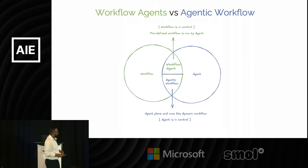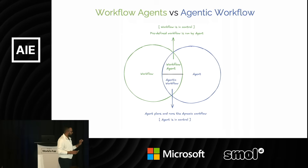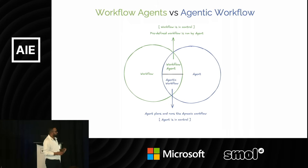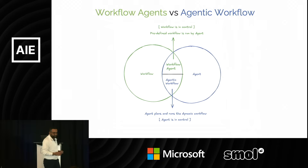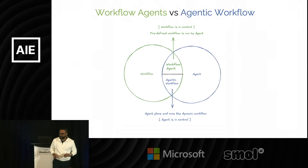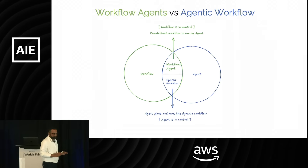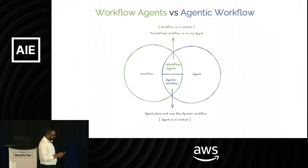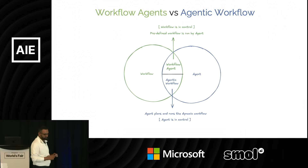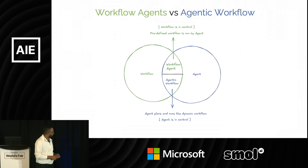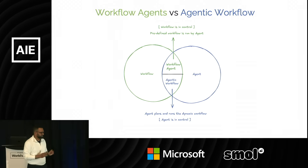A workflow agent is a predefined workflow run by an agent, while an agentic workflow is a workflow planned and run by an agent. I know these terms are quite confusing, and in AI we are very bad at naming things, so don't worry. In the case of a workflow agent, just remember that the workflow is in control and the workflow is static. In the case of an agentic workflow, the agent is always in control and the workflow is dynamic.